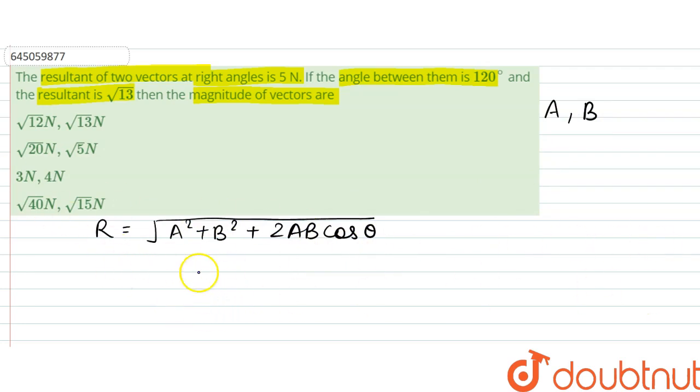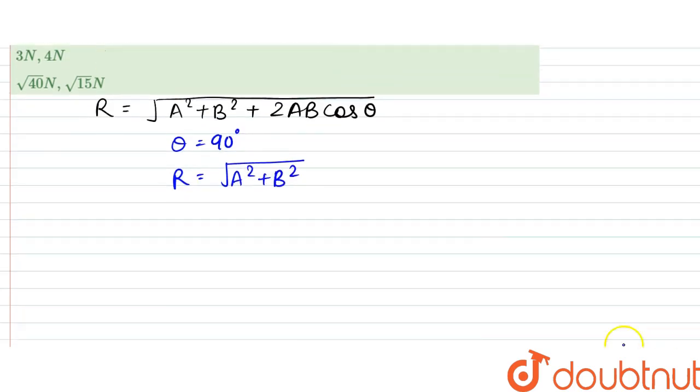From here, when theta is equal to 90 degrees, the resultant would be equal to the root of A squared plus B squared. From here, what we could say is that R squared would be A squared plus B squared.